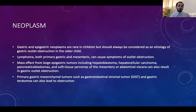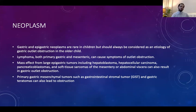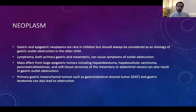Neoplasms can also cause gastric outlet obstruction. Primary gastric tumors are rare in pediatrics but can occur in older children as GIST or lymphoma. Extragastric tumors from the surrounding epigastric area — such as hepatoblastoma, hepatocellular carcinoma, pancreatoblastoma, or other masses — can compress the gastric outlet and cause obstruction.